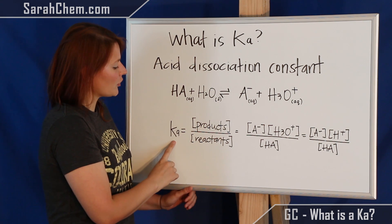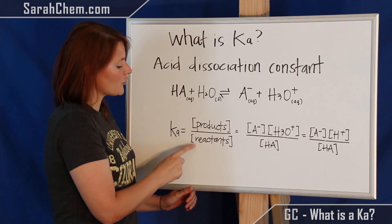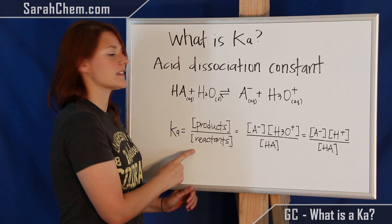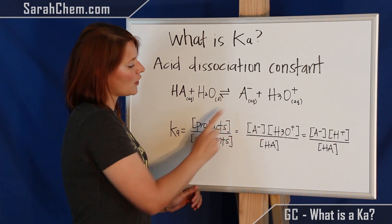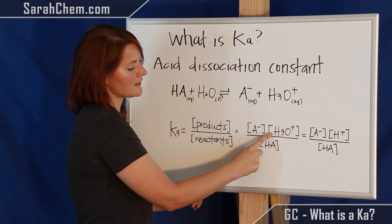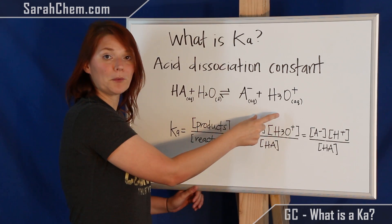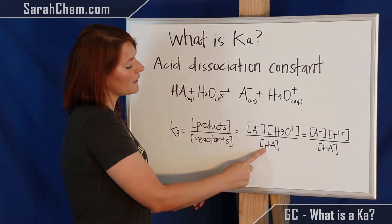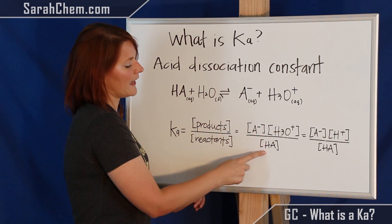So now, with our K expression, we have products concentration over the concentration of our reactants. So over here, our products are A-, so the concentration here, times hydronium, its concentration there, both in the numerator. And then if we look in the denominator, we have the concentration of our acid, HA.